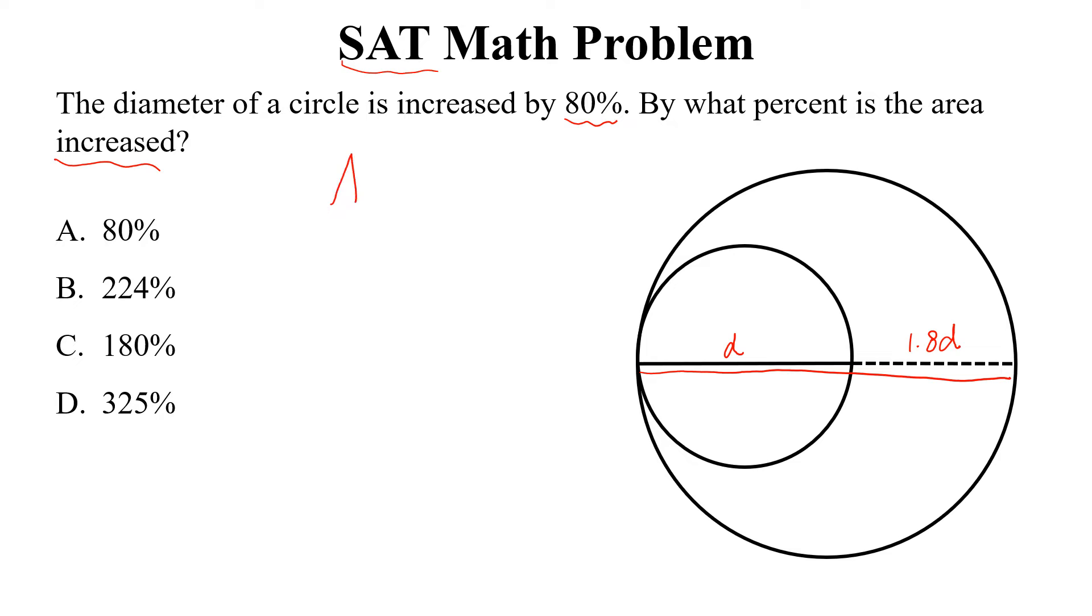The area of the original circle is denoted by A1. This is equal to pi into d by 2 square, d by 2 is the radius. So this is equal to pi d square divided by 4.